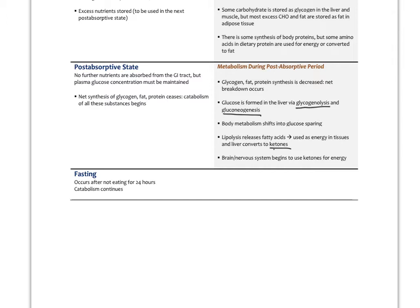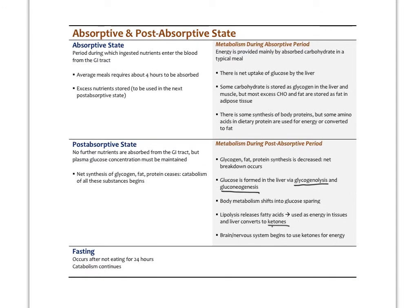Fasting begins after not eating for 24 hours, and the catabolic state continues further into ketosis and gluconeogenesis. In the absorptive state, hormones are characterized by high insulin — especially from dietary carbohydrates — and low glucagon and low epinephrine.